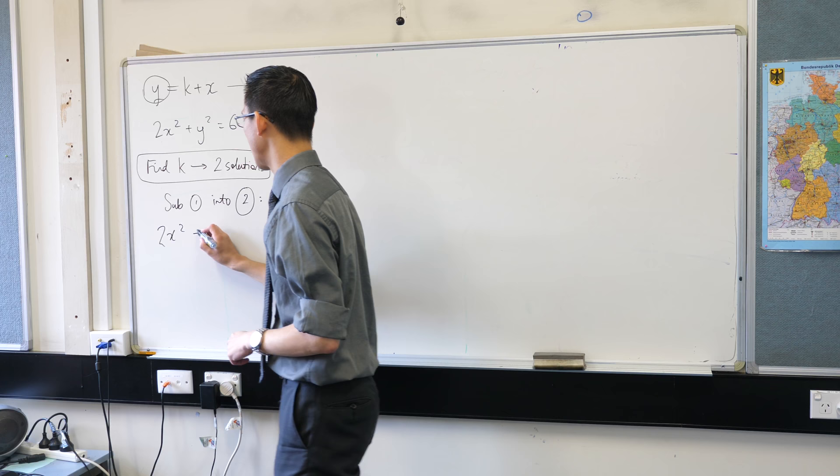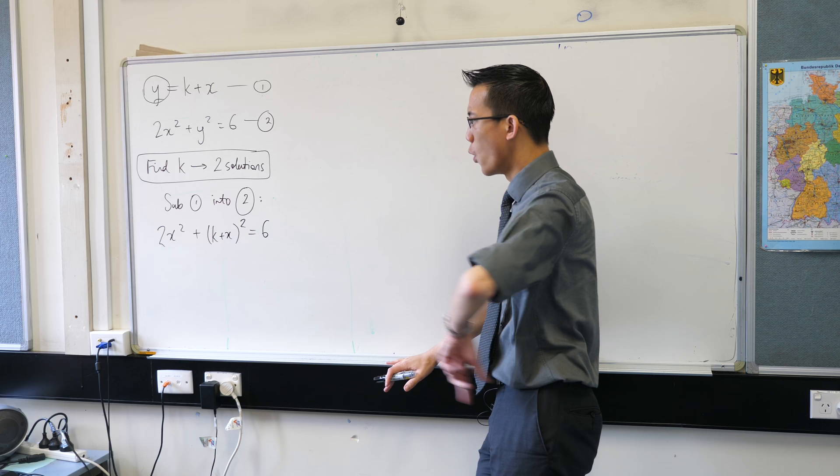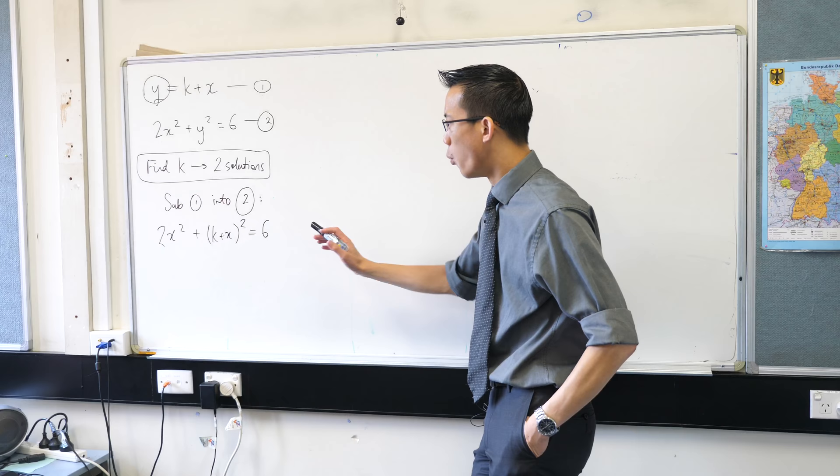So what that gives me is 2x squared is still hanging out the front. Here is what I'm going to put in place of y. So k plus x squared equals 6. Now at this point if they're really being nice to me I might even get a mark at this point but what is this? What have I just created?